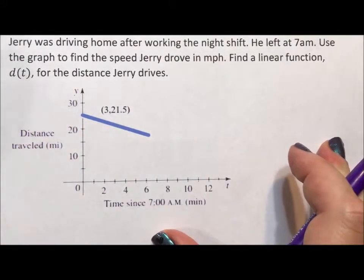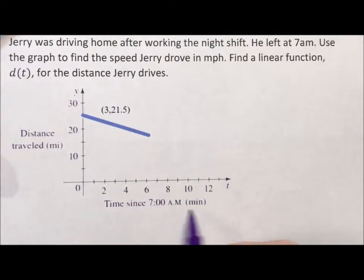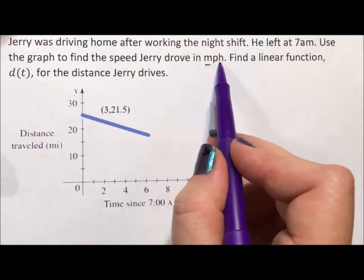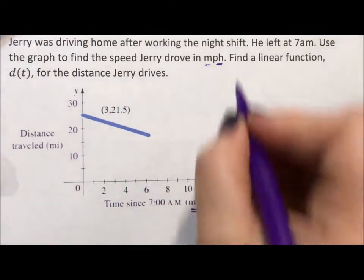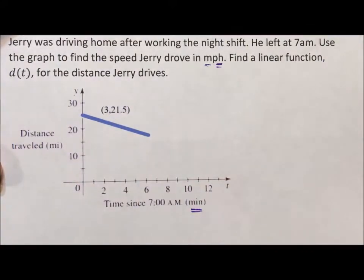So it says Jerry was driving home after working the night shift. He left at 7 a.m. Use the graph to find the speed Jerry drove in miles per hour. This is minutes, this is hours. We're going to have to deal with that and find a linear function d(t) for the distance Jerry drives.